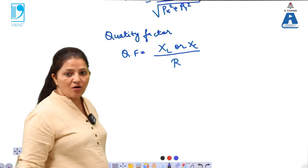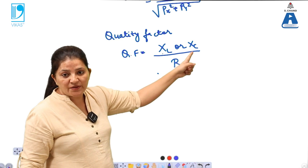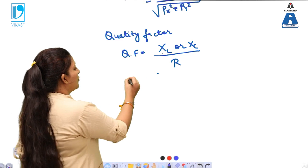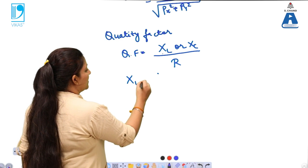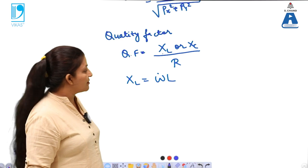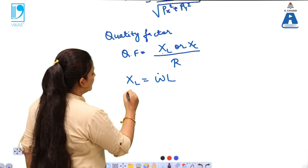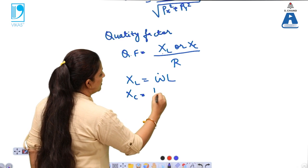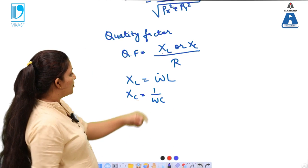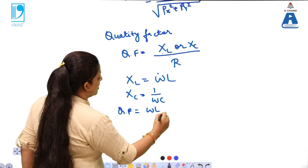So the ratio of reactance for the inductor or capacitance divided by resistance is called the quality factor. Now we know that XL is given by omega into L, that is the reactance for the inductor, and XC is equals to 1 by omega C. This is R, on dividing these two we will get quality factor that is equals to omega L by R.